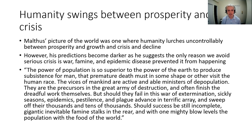His predictions become darker still because he says the only reason we avoid an even more serious crisis is things like war, famine, and epidemic disease, which limit the population by killing people. He writes: 'The power of population is so superior to the power of the earth to produce subsistence for man that premature death must in some shape or other visit the human race... should success be still incomplete, gigantic inevitable famine stalks in the rear and with one mighty blow levels the population with the food of the world.'